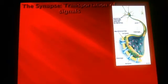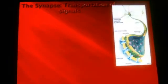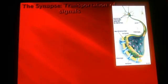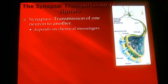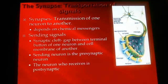So that's what we're going to pick up with this video now — we're going to get into what's called the synapse, the transportation of signals, and we're going to talk about what happens at the very last part of this process of how information gets through a neuron and then shoots into the next neuron. The synapse is the transmission of one neuron to another, and it depends upon chemical messengers called neurotransmitters.